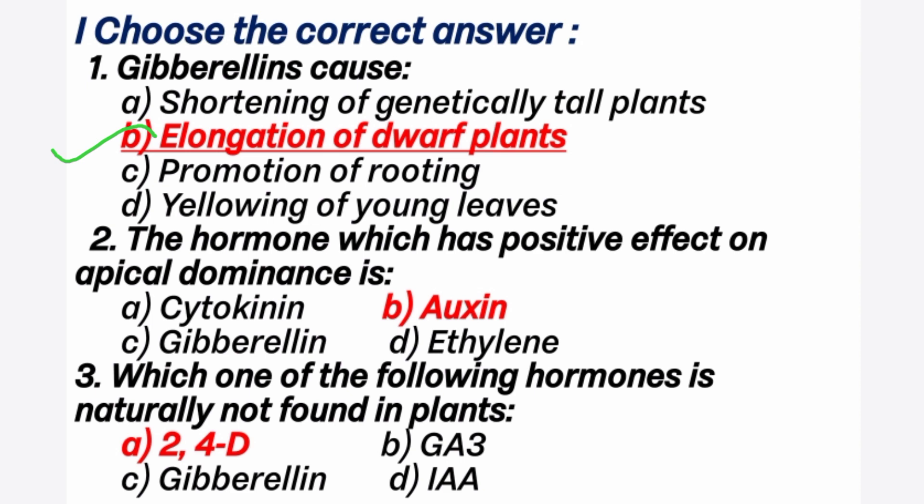Totally 5 plant hormones are there: 1. Auxin, 2. Cytokinin, 3. Gibberellin, 4. Ethylene, 5. Abscisic Acid. 2nd question: the hormone which has positive effect on apical dominance is? Answer is B option: Auxin.